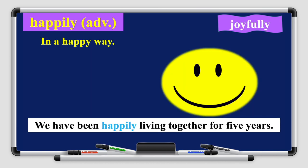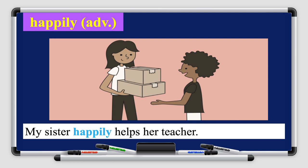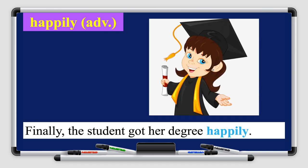The next word is 'happily' — it's an adverb meaning in a happy way. Its synonym is 'joyfully.' Let's read the sentences: we have been happily living together for five years. My sister happily helps her teacher — she is offering help with a smile. Finally, the student got her degree happily — you can see the girl holding her degree and smiling happily.